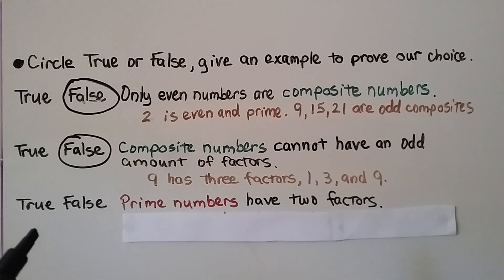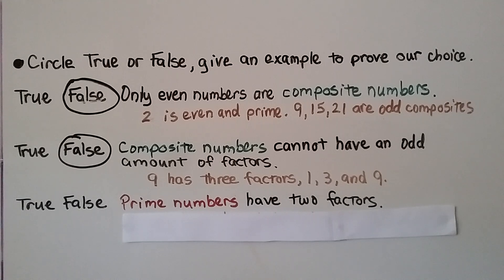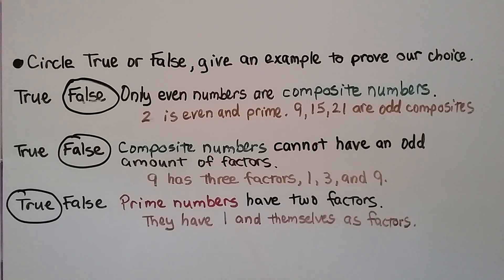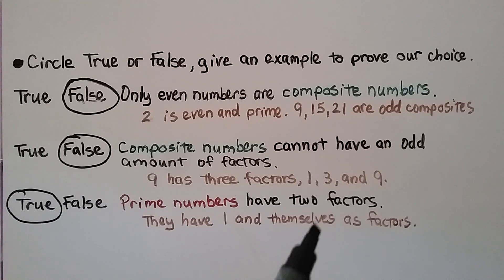True or false: prime numbers have 2 factors. The answer is true. Prime numbers have 1 and themselves as their two factors.